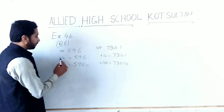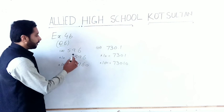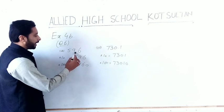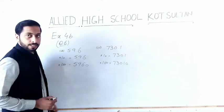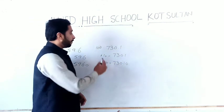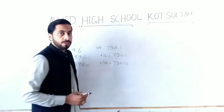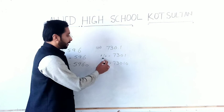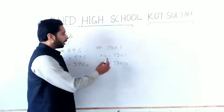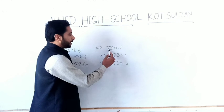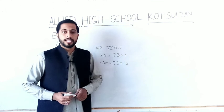When we multiply 59.6 by 10, it will become 596. When we multiply 59.6 by 100, it will become 5960. In the same way, part D is 730.1. When we multiply it by 10 it will become 7301, and when we multiply 730.1 by 100 it will become 73010.